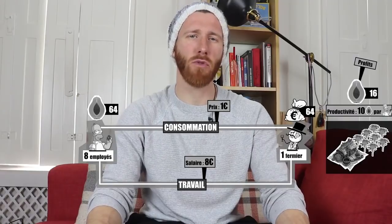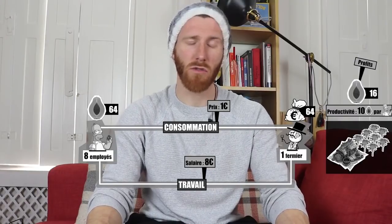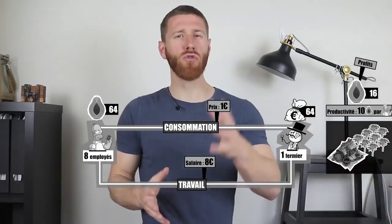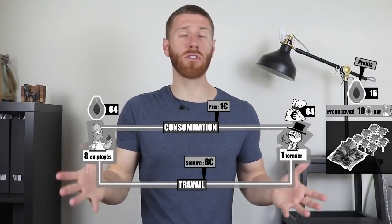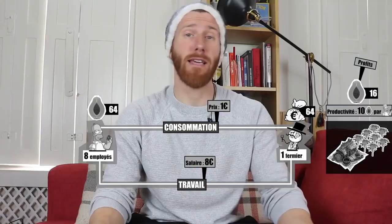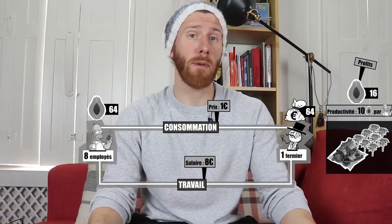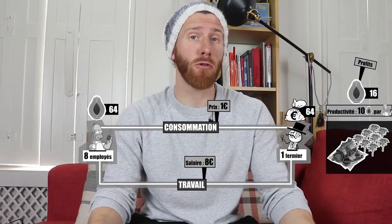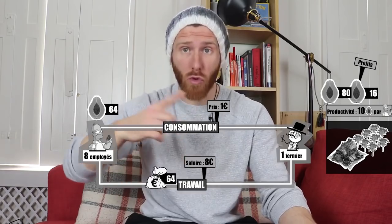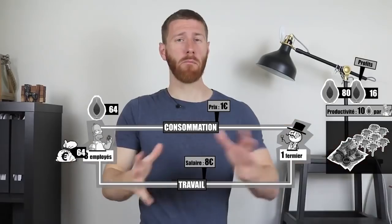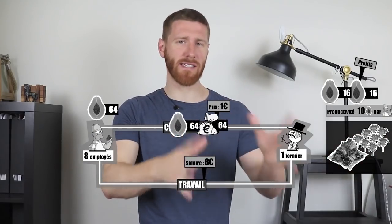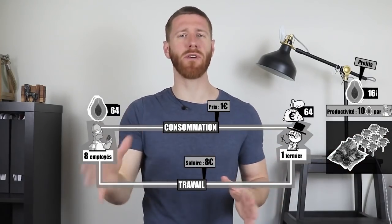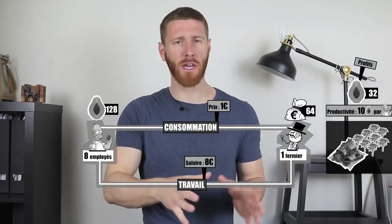The employees consume 64 papayas with their salary, and the farmer keeps 16 papayas for himself — those are the farmer's profits, since he is also the owner of the company. So those are papaya-dividends, in a sense. What's left for the farmer are the profits — that's logical. And the farmer needs the €64 to pay employees to produce 80 more papayas the following round. So we have a model running with wages, consumption, and profits.